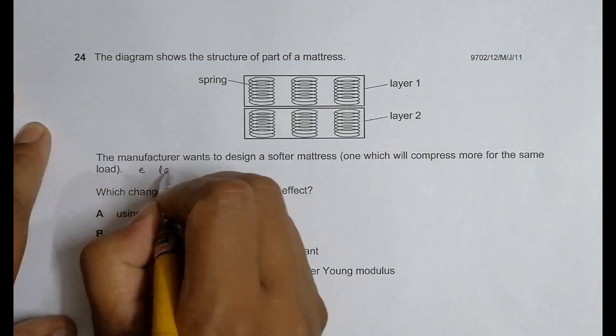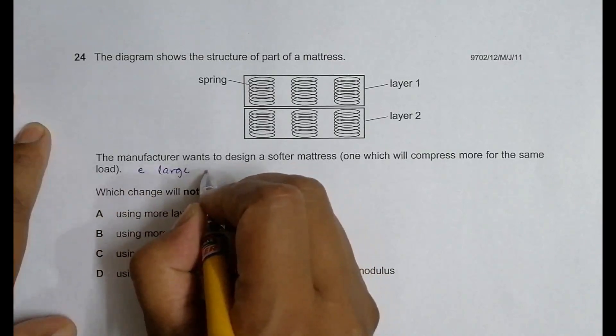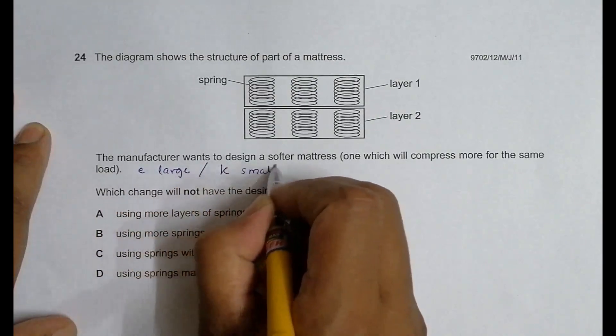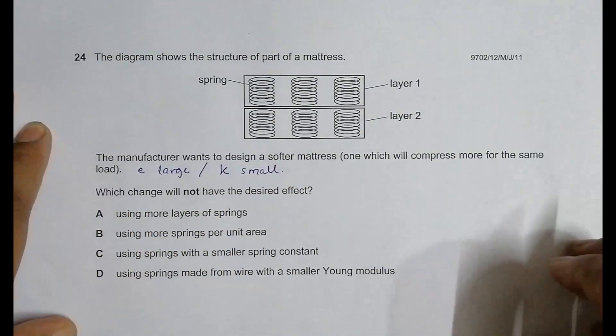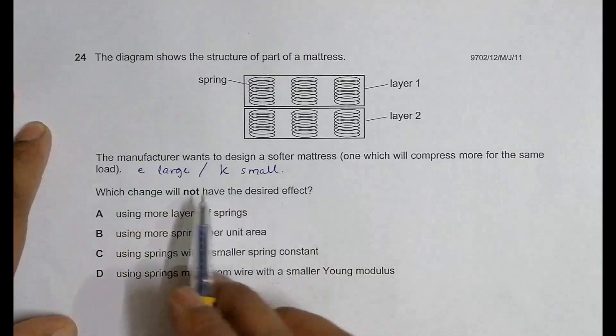Softer mattress means one which will compress more for the same load. That means its E will be large, or X we can say, and it also means that its k, the spring constant, will be small. The overall spring constant should be small.